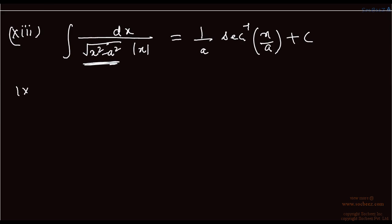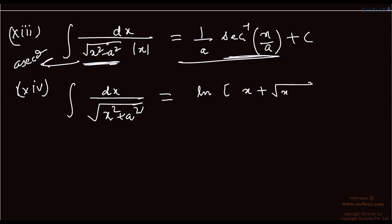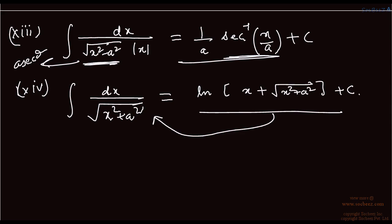The next standard formula: the integral of dx upon root of (x² + a²). We have put x = a sec θ for the previous case. For this case the result is ln|x + root of (x² + a²)| plus c. The differentiation of that expression gives back the original integrand.